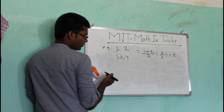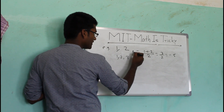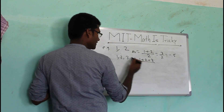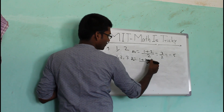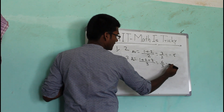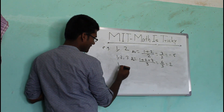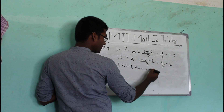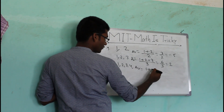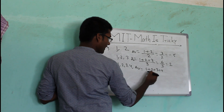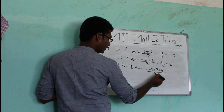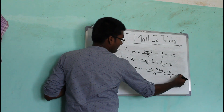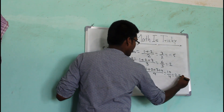Now let's take one more example: 1, 2, 3. To find the average, we do 1 plus 2 plus 3 divided by 3, which gives 6 by 3 = 2. Taking one more number: 1, 2, 3, 4 — we add all the numbers: 1 plus 2 plus 3 plus 4 = 10, divided by 4, which gives 2.5.